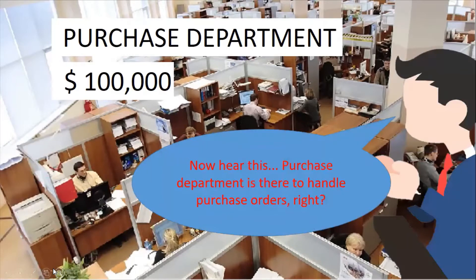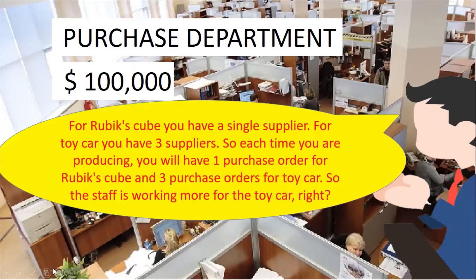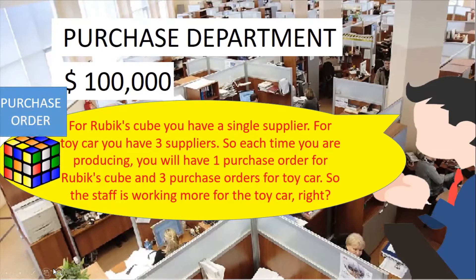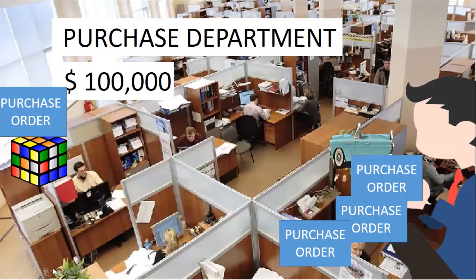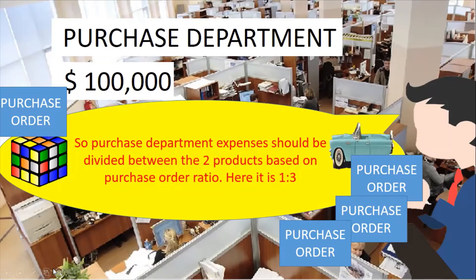Now hear this. The purchase department is there to handle purchase orders. For Rubik's Cube, you have a single supplier. For Toy Car, you have three suppliers. So each time you are producing, you will have one purchase order for the Rubik's Cube and three purchase orders for the Toy Car. So the staff is working more for the Toy Car. Therefore, purchase department expenses should be divided between the two products based on purchase order ratio.